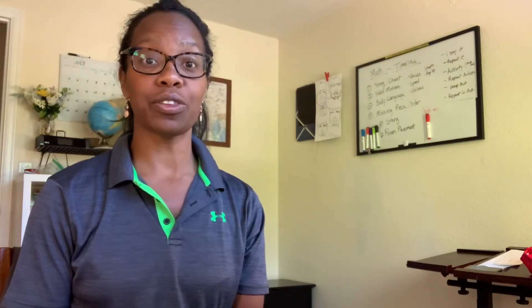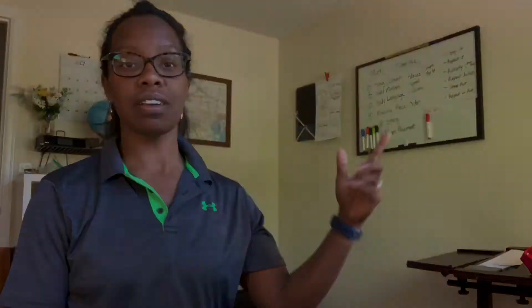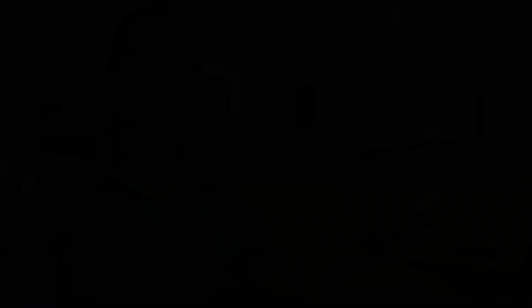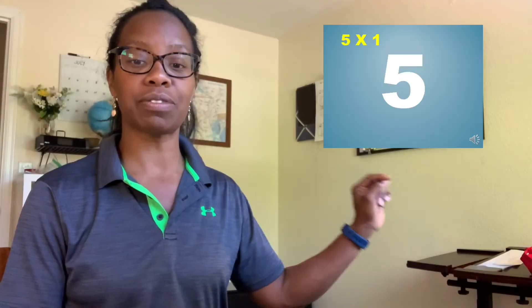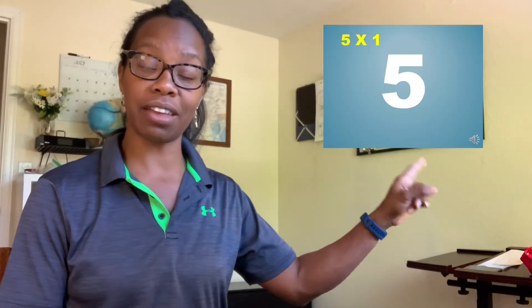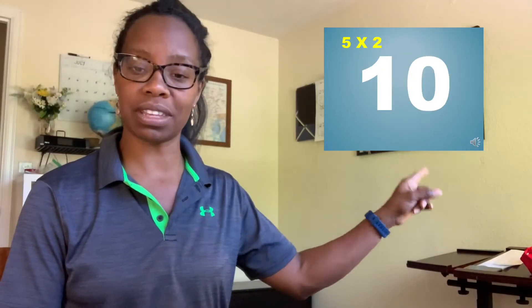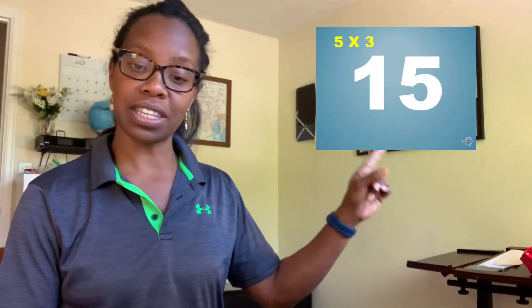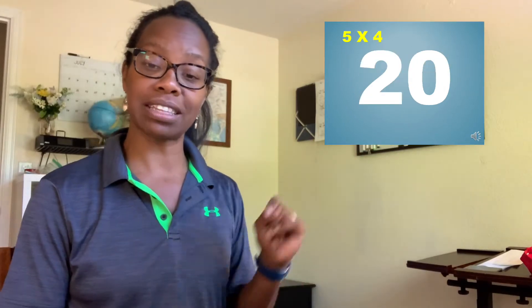So five, let's say it together — the full equation. Five times one equals five, five times two equals ten, five times three equals fifteen, five times four equals twenty, and so on.